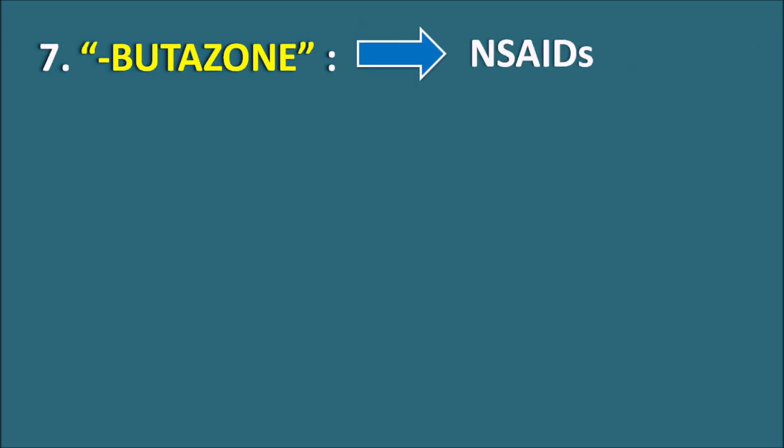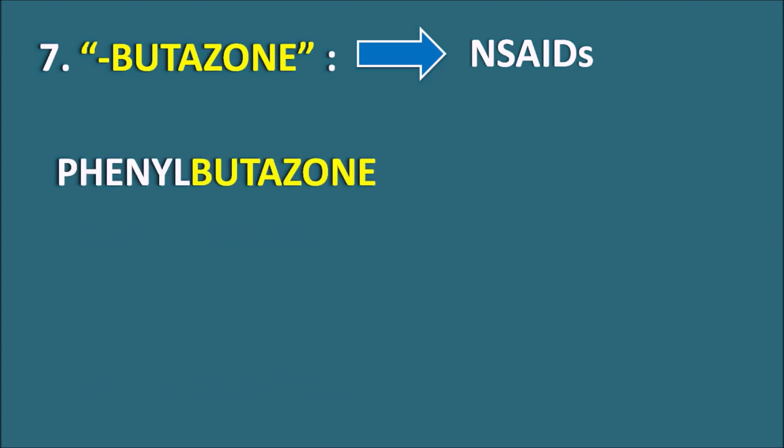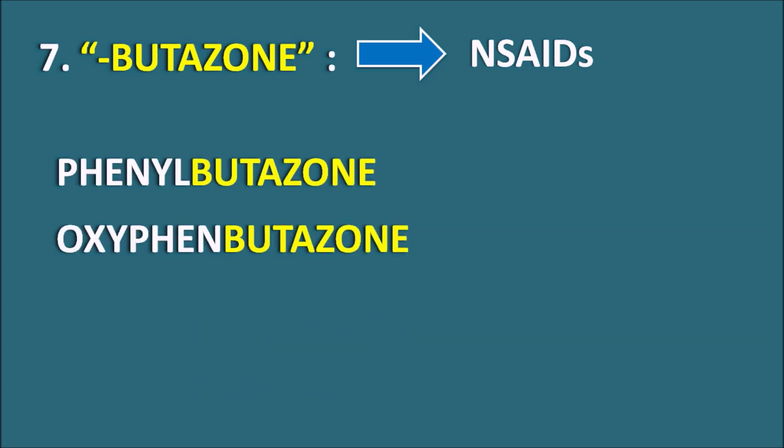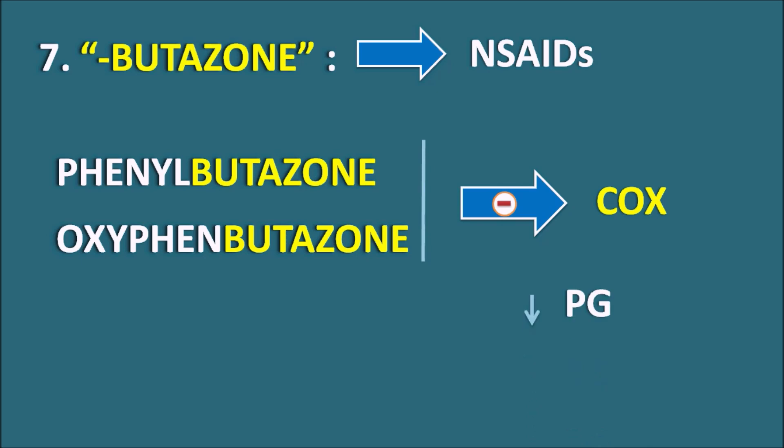Seventh one is the suffix -butazone. This indicates they are NSAIDs belonging to the phenylbutazone category. We have two drugs: phenylbutazone and oxyphenbutazone. These drugs inhibit the COX enzyme, cyclooxygenase enzyme, thereby inhibiting prostaglandin synthesis. Prostaglandins are mainly responsible for increased pain sensation as well as inflammation, so these drugs can be used as analgesics as well as anti-inflammatory agents.